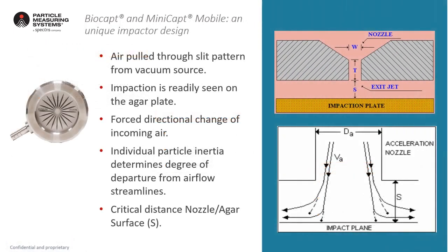The design of our impactor is unique on the market. As you can see from the image, it has 20 slits that form a radial design. This design is clearly visible on the agar after sampling, and the peculiarity is that it allows the operator to immediately evaluate the quality of the sample. The design of the slits ensures the correct direction that impacts the surface of the plate. We can say that the microorganisms are gently placed on the agar, ensuring their survival — that is the goal of the sampling. Last but not least, the distance between the agar and the impactor is always constant. All those parameters ensure the correct and best biological efficiency of an active air sampling.